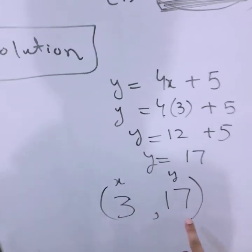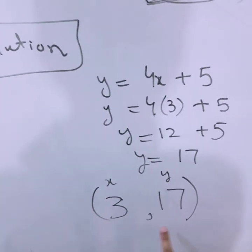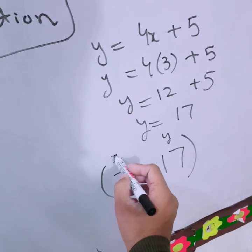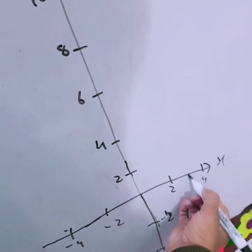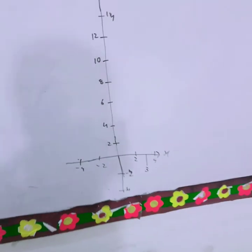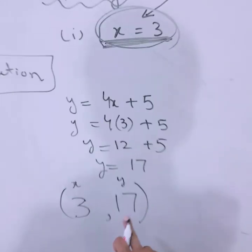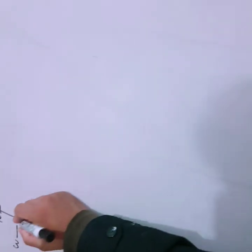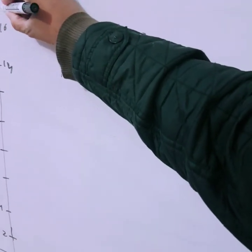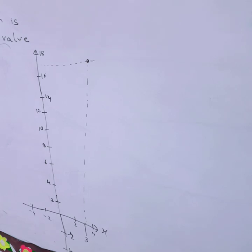Now we shall come to the main point — we have to show the point (3, 17) on our grid. First, go to the x-axis and go till 3. The value 3 will be available between 2 and 4. From 3, go up till 17, which is available between 16 and 18. So this is the point we have to plot.